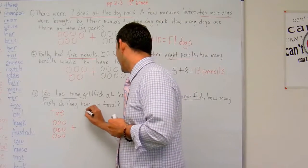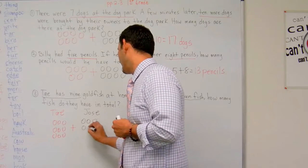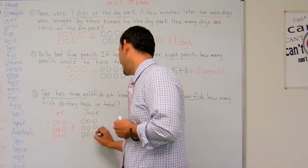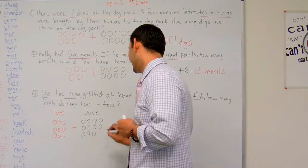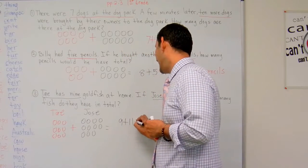So let's see. Jose has 1, 2, 3, 4, 5, 6, 7, 8, 9, 10, 11. So we have 9 plus 11 equals.